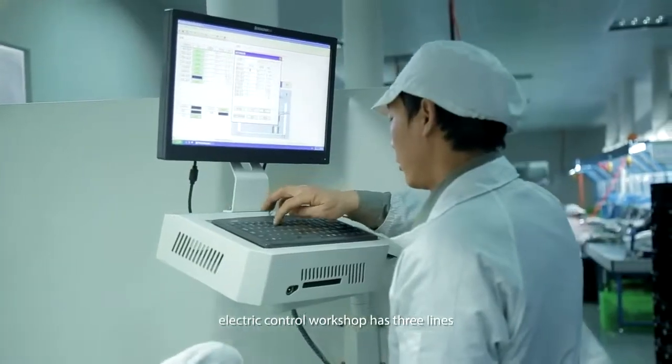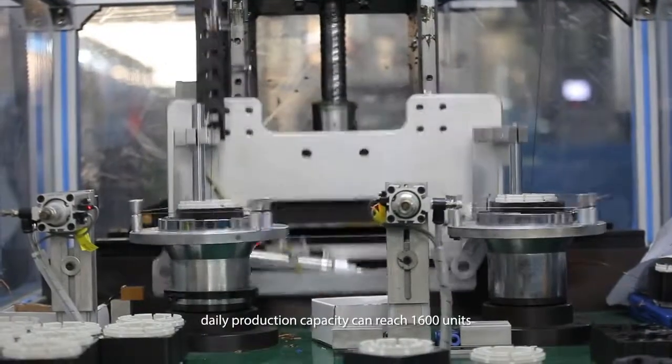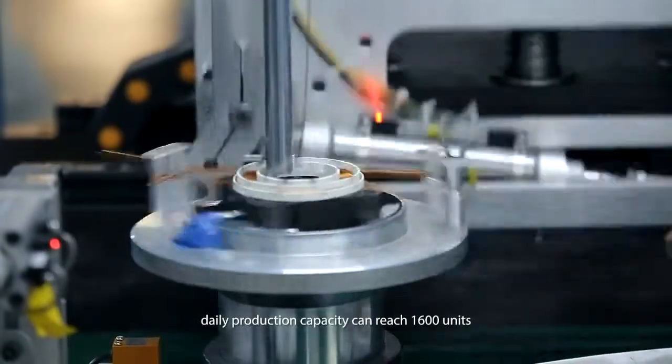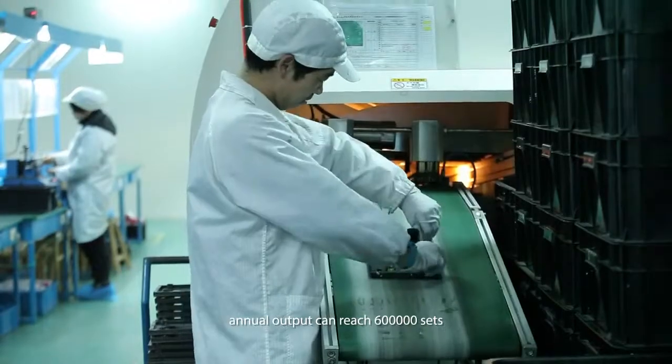Electric control workshop mainly focuses on overlock and lockstitch electronic control. Daily production capacity can reach 1,600 units. Annual output can reach 600,000 sets.